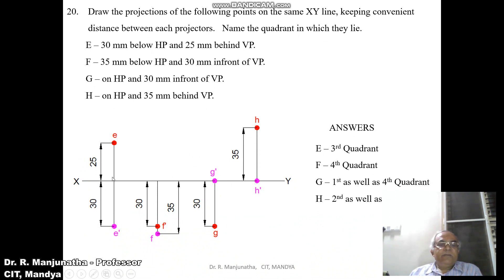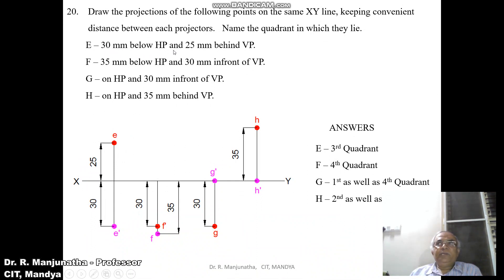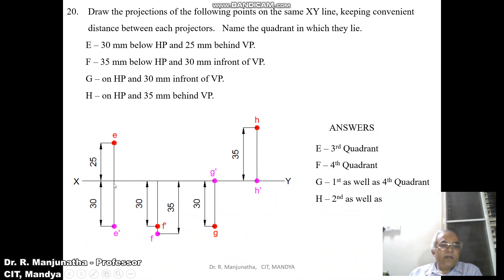First, we will draw a common XY line and mark HP and VP. We are now in a position to analyze this without drawing three-dimensional sketches. For point E, 30mm below HP — below HP appears only in the third quadrant and fourth quadrant. So below HP will always be below the XY line.